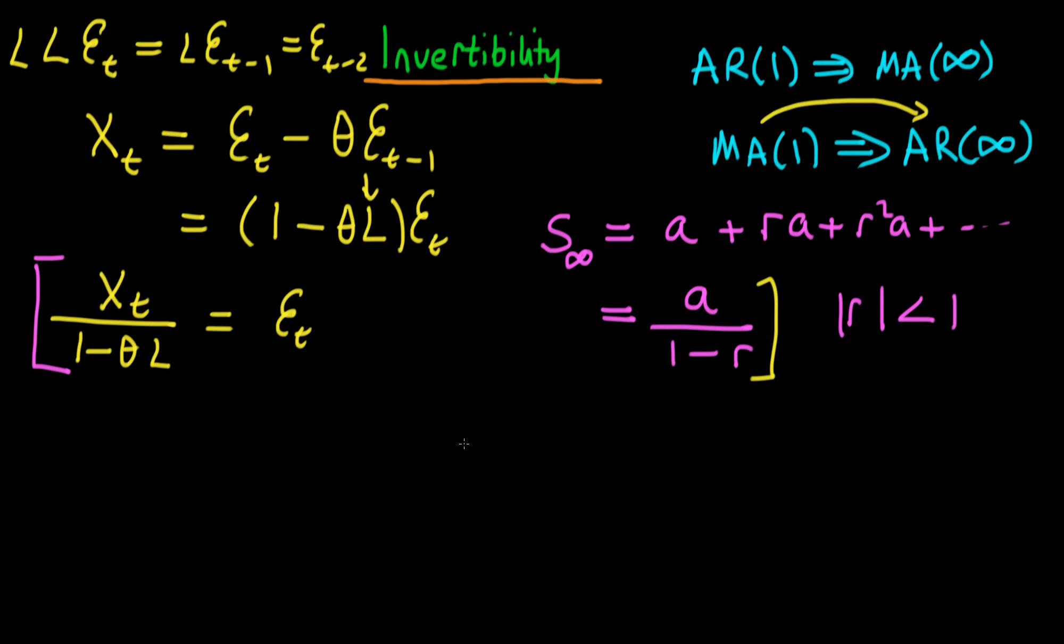And the equivalent conditions here essentially are that theta or the modulus of theta has to be less than 1. And this is actually what is known as the condition for us to be able to invert a moving average of order 1 process.